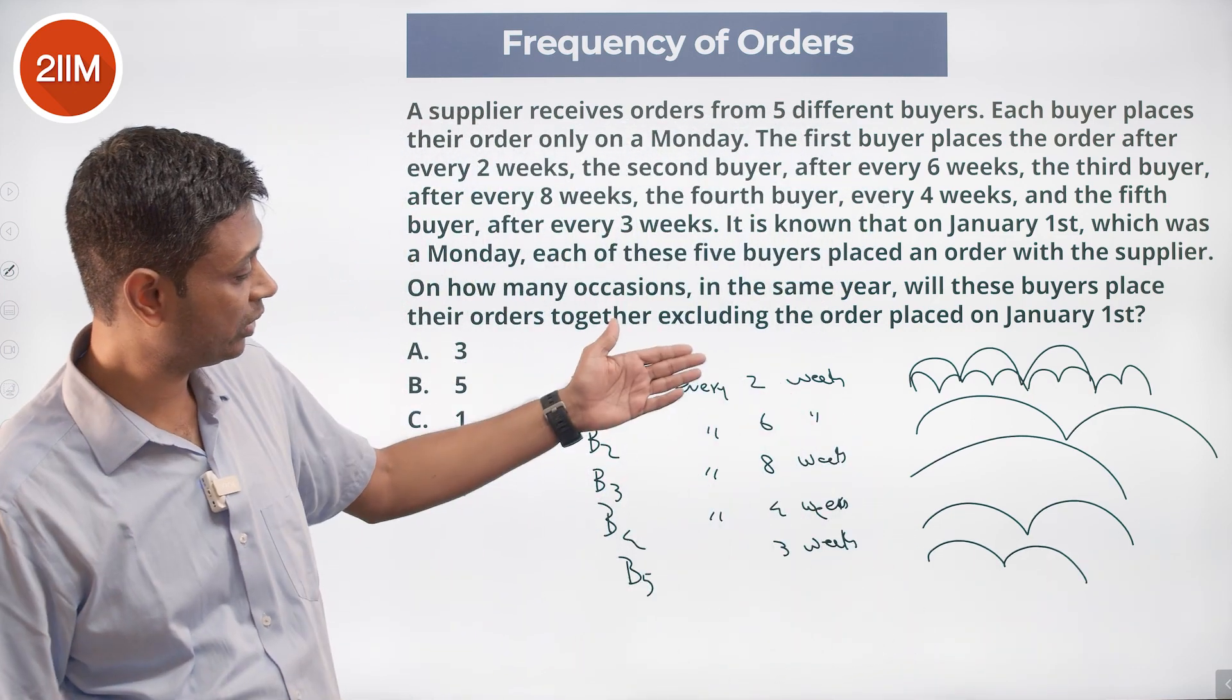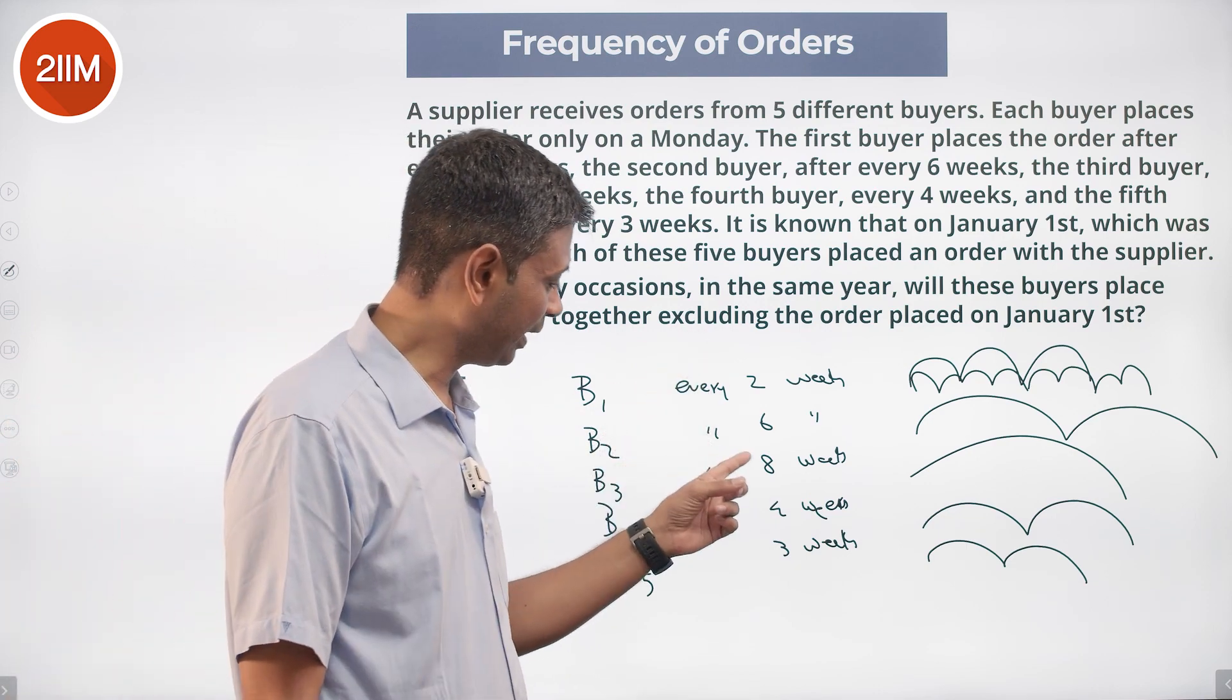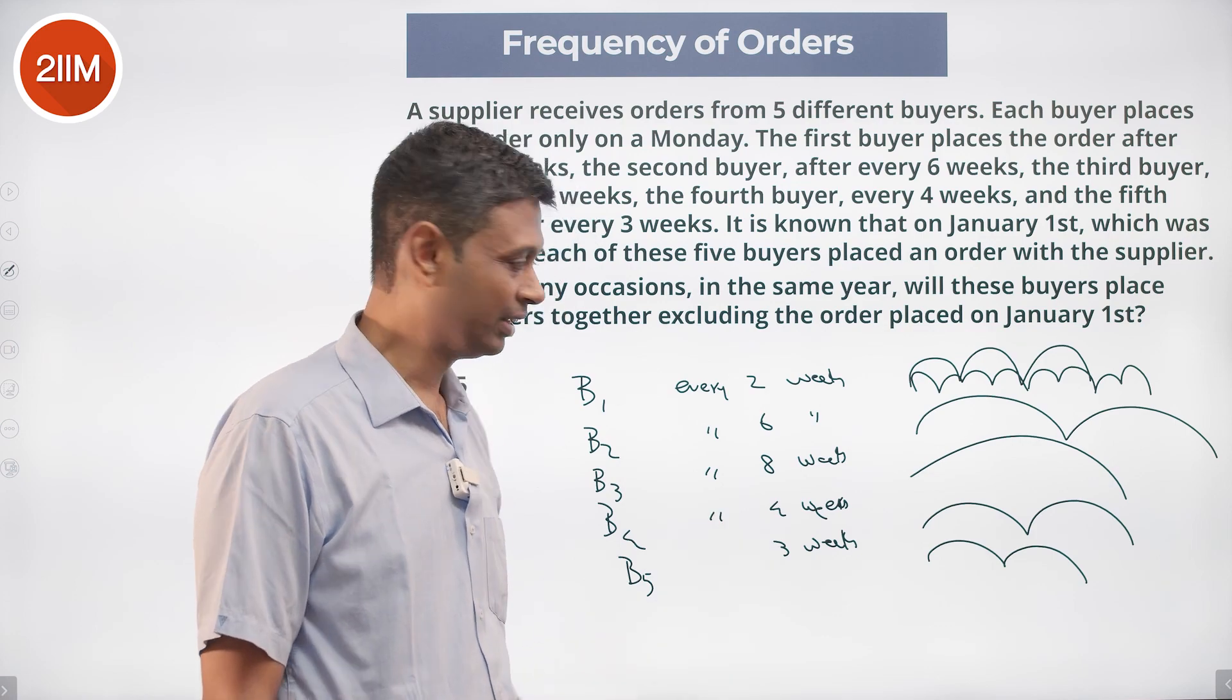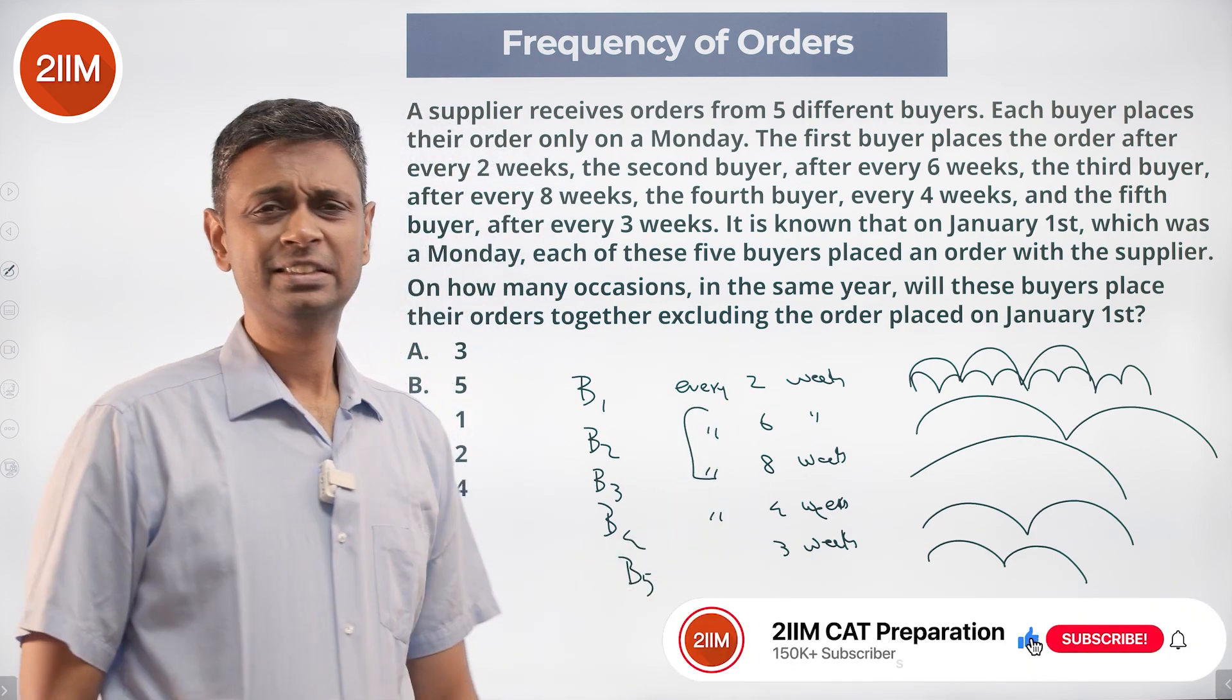Once every two weeks, every six weeks, every eight weeks - two and four are factors of eight, you can forget that. Three is a factor of six, we can forget. Effectively calculating LCM of 6 and 8.